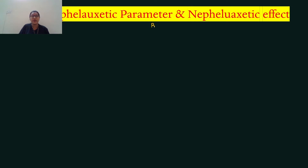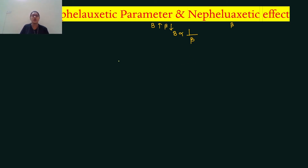The nephelauxetic parameter is denoted as B, and the nephelauxetic effect is denoted as beta. The nephelauxetic parameter is inversely proportional to the nephelauxetic effect. B is inversely proportional to beta — meaning when the nephelauxetic parameter increases, the nephelauxetic effect decreases, because both are inversely proportional.